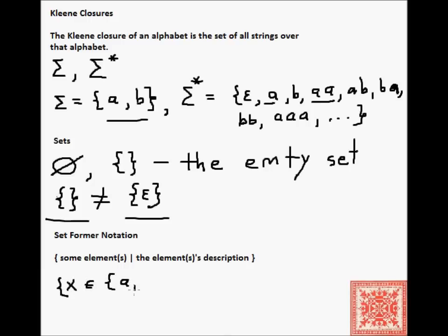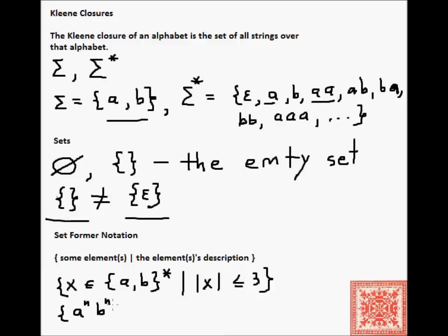Here's an example. Let's say we take x to be in the Kleene closure of the alphabet {a, b}, such that the length of x is less than or equal to 3. That describes all strings over a's and b's, including the empty string, whose length is at most 3 — so lengths 0, 1, 2, and 3. Here's another example: a^n b^n such that n is greater than or equal to 1. The empty string is not going to be in that set — it describes all strings with equal numbers of a's followed by b's.